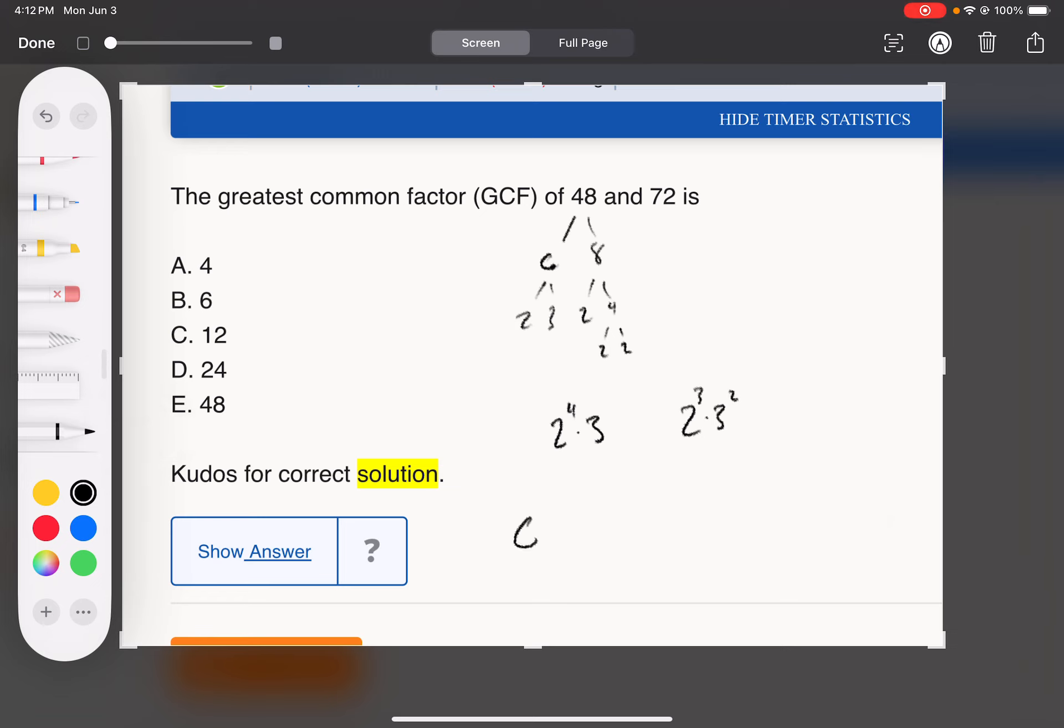The GCF is simply what they have in common. So what's the most they have in common? Well, they have 2 cubed in common. I mean, 48 has four 2s, 72 only has three, so they only have three 2s in common.